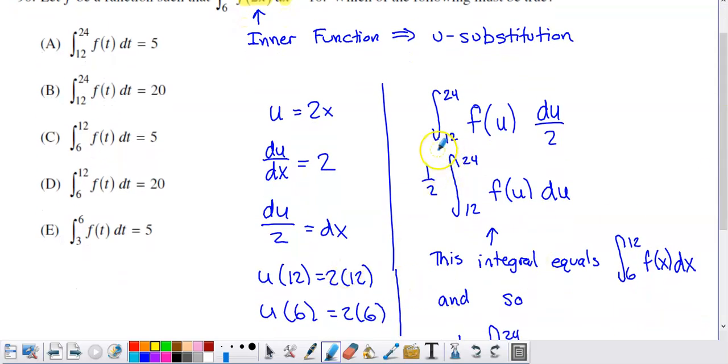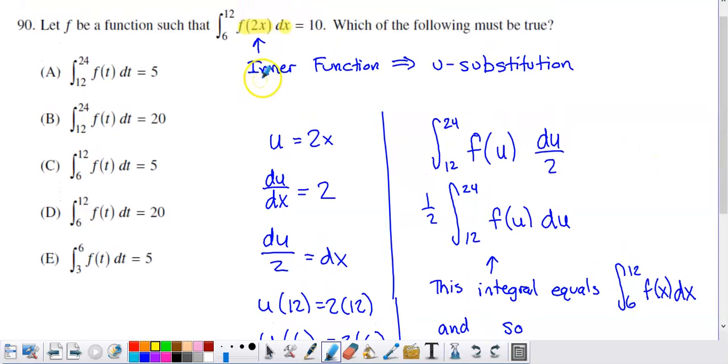All you need to do to figure out what u value corresponds to, I guess I can't see the original x values anymore, to figure out what u value corresponds to the x value of 12, I need to put 12 in place of this x. And the u value that corresponds to the x value of 12 is 2 times 12, or 24. Similarly, the u value that corresponds to the x value of 6 is going to be 2 times 6, or 12.